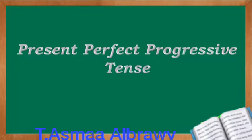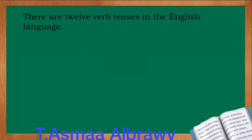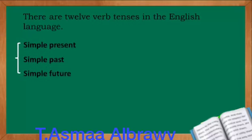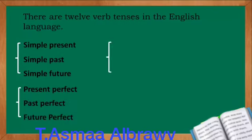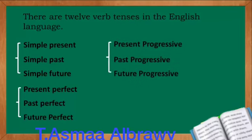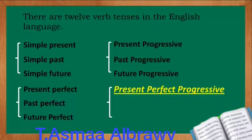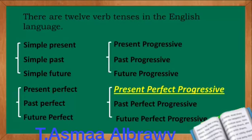Present Perfect Progressive Tense. There are twelve verb tenses in the English language. These are the simple present, simple past, simple future, present perfect, past perfect, future perfect, present progressive, past progressive, future progressive, present perfect progressive, past perfect progressive, and future perfect progressive.